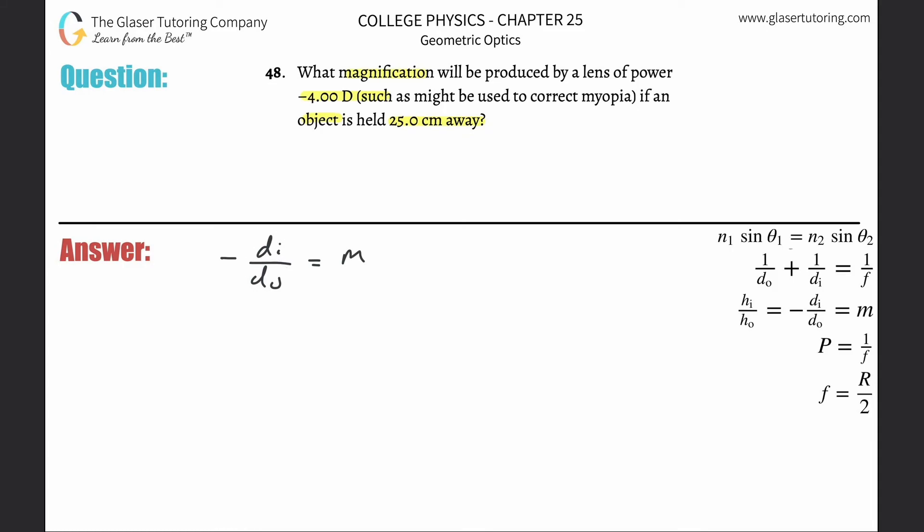They tell us the object is held 25 centimeters away. The object distance here is 25 centimeters. You're allowed to leave this in centimeters, but you have to be careful. I'm going to convert this into meters because I'm given diopters, and that's really one over meter. So this is now 0.25 m, our object distance.